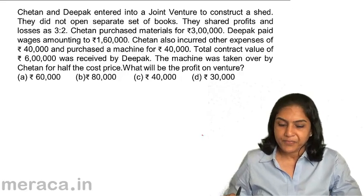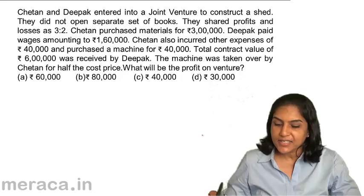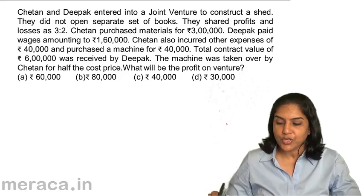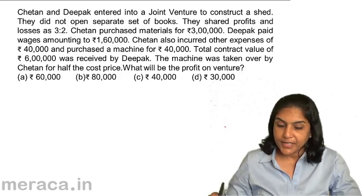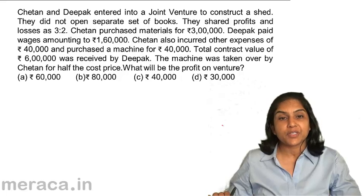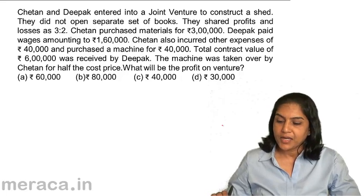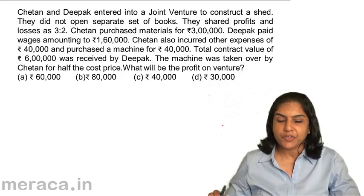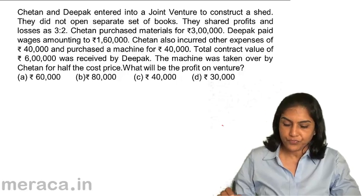Another example: Chetan and Deepak entered into a joint venture to construct a shed. They did not open a separate set of books. They shared profits and losses in the ratio 3:2.